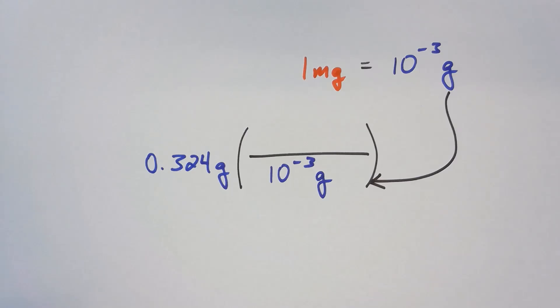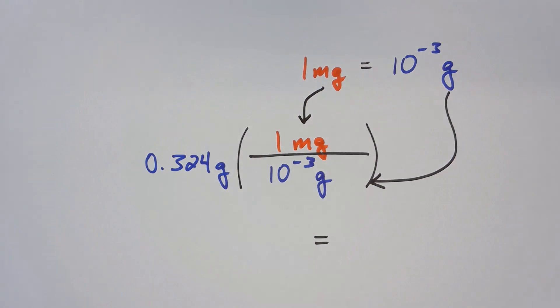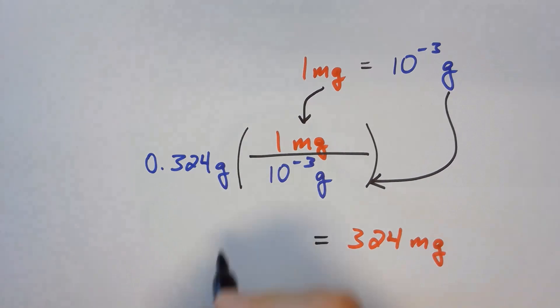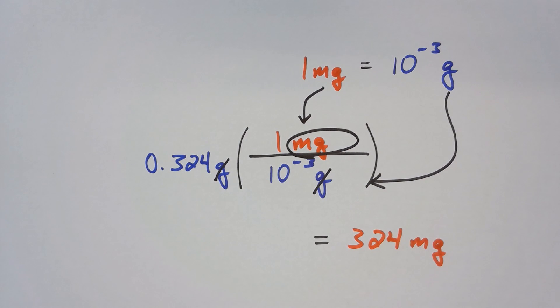In this case, we need to put grams in the denominator and milligrams in the numerator. Algebraically, grams divided by grams is 1 and we are left with the desired units, milligrams in the numerator.